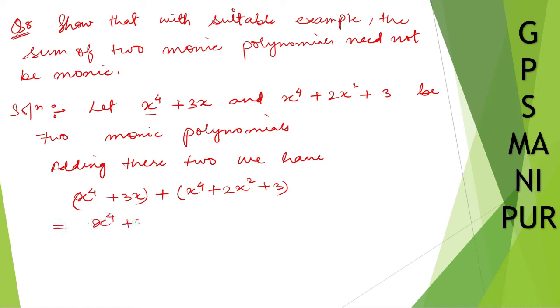Then it will be x to the power 4 plus 3x plus, let's open the bracket, plus 2x square plus 3. x to the power 4 plus x to the power 4 will be 2x to the power 4 plus 3x. So let's write down 2x square plus 3x plus 3.